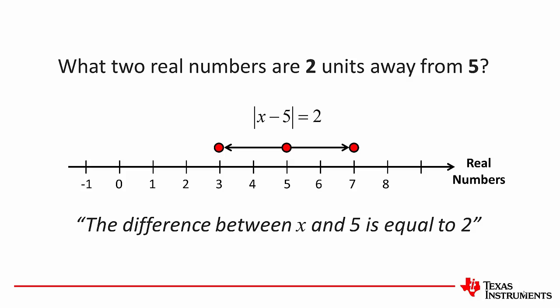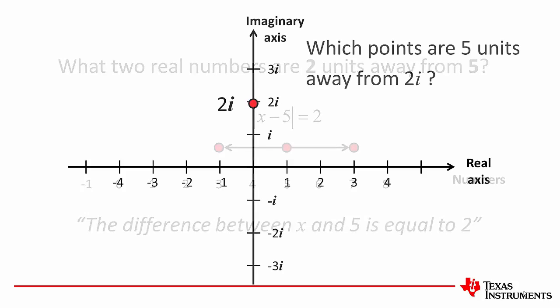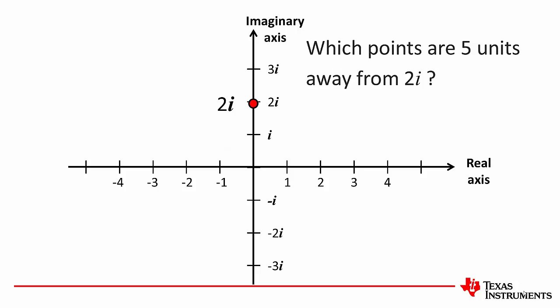Now let's have a look at a similar problem on the complex plane. Real numbers occur in a line. Complex numbers occur in a plane, so we would expect to see a lot more solutions. So what numbers or points are five units away from 2i?